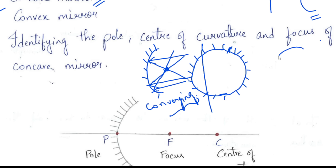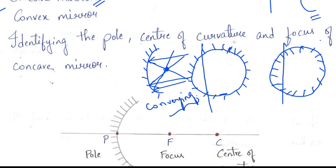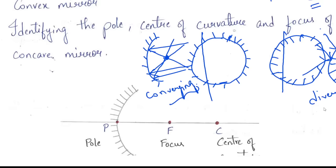Next, for the convex mirror, we take the same sphere example but this time we polish the outer part of the sphere and apply the mercury inside. We then cut a part from this mirror. Whenever you pass a light ray onto this mirror, it will diverge. The reflecting rays do not meet — they are diverging. So in concave mirror the rays were meeting at a point, but in convex mirror they are diverging. Therefore, convex mirror is also called a diverging mirror.